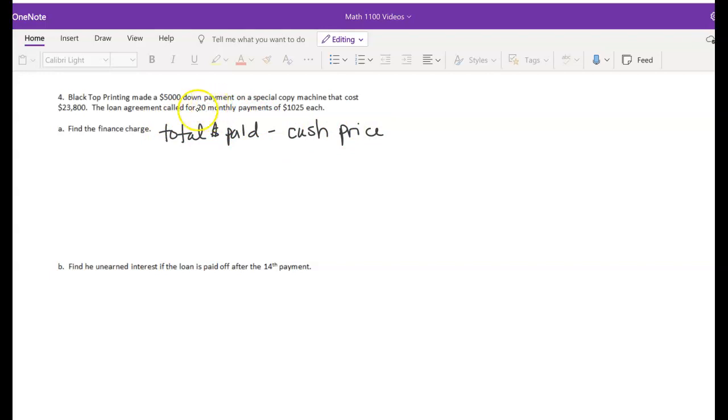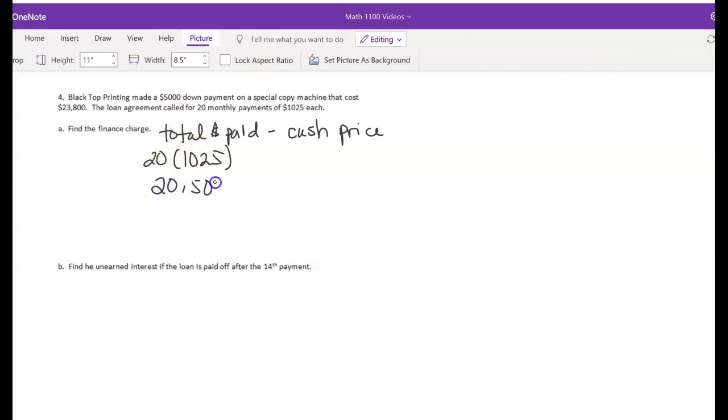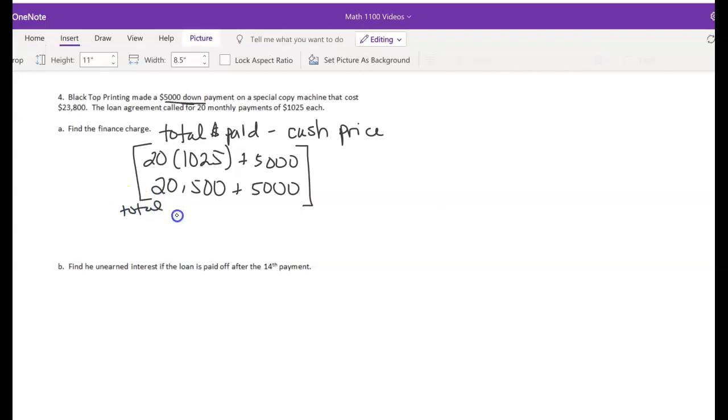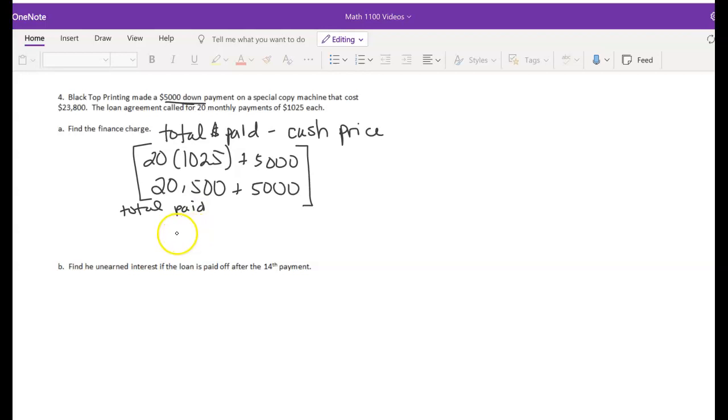Well, the total money paid for the item is 20 payments of $1,025, which equals $20,500. Okay, plus there was a $5,000 down payment that the person made. So that's also part of the total paid. So all of this is the total paid and so we get our total paid as $25,500.